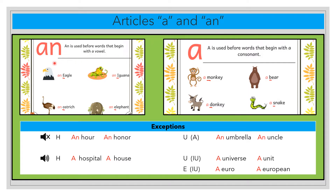For the article an, we need to use a word that begins with a vowel. For example, eagle begins with e, ostrich begins with o, iguana begins with i, and elephant begins with e. So we use an followed by a word that begins with a vowel: an eagle, an iguana, an ostrich, and an elephant — vowel e, vowel i, vowel o, and vowel e.